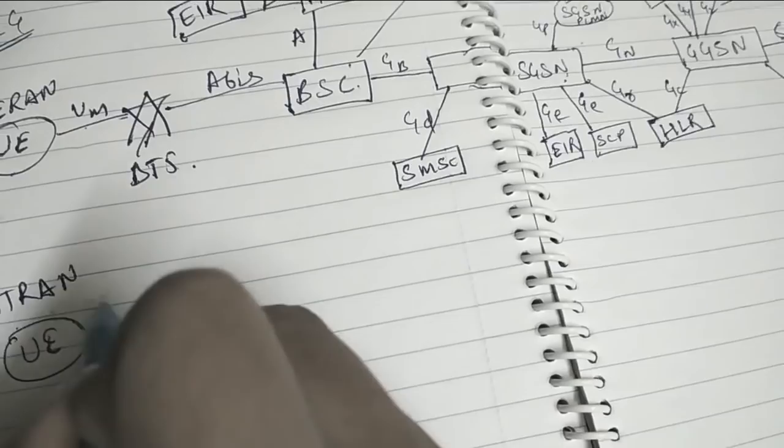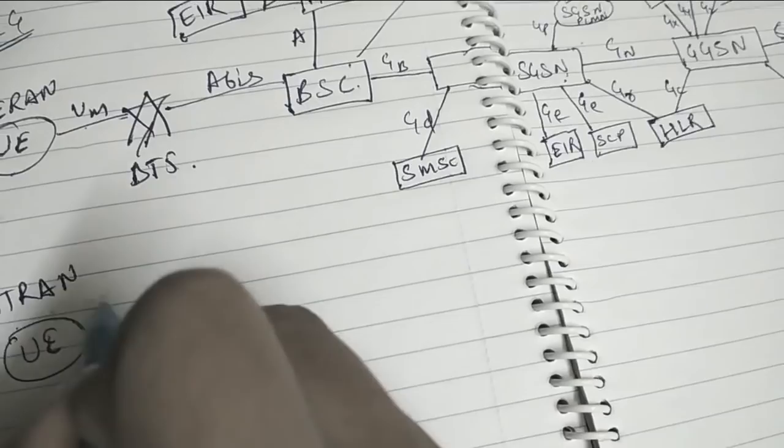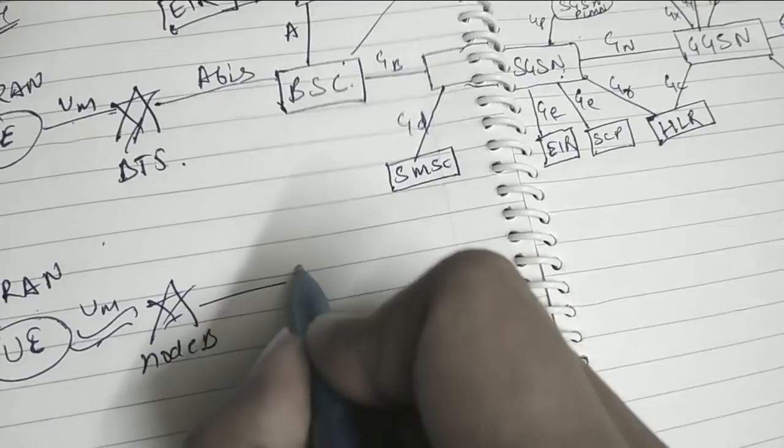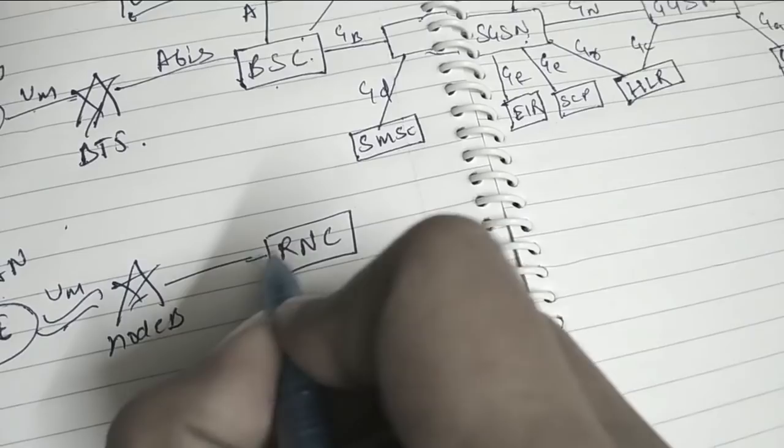Now here is the difference. Here in place of BSC, in 3G we use RNC, that is Radio Network Controller. Node B and RNC are connected to each other by IUB Interface. In 2G it was ABIS Interface. In 3G it is IUB Interface.